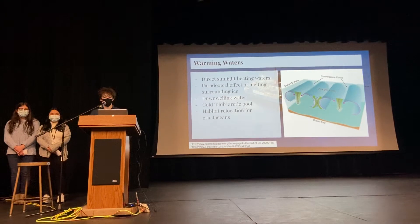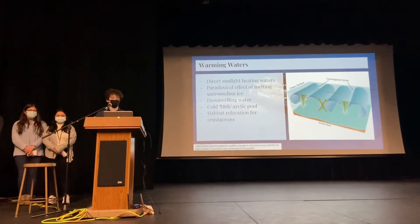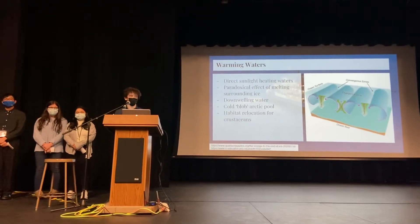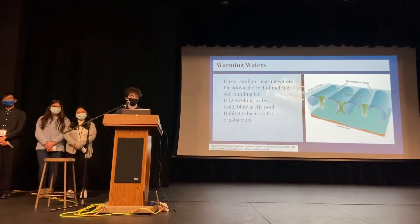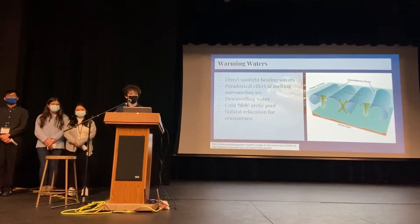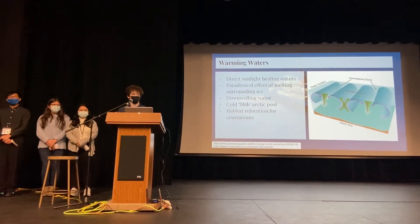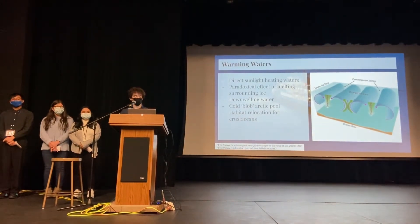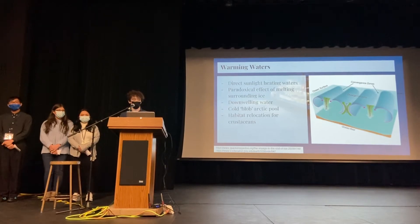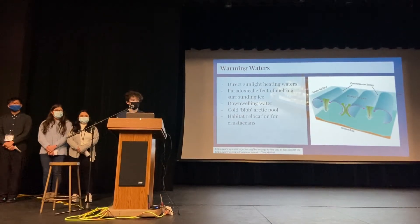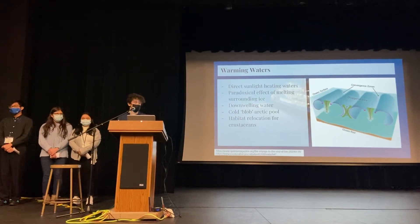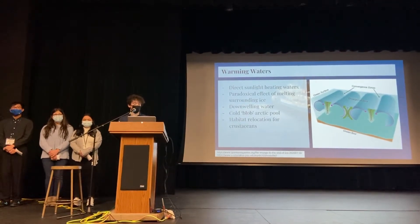With direct sunlight on water, we see this paradoxical effect of melting sea ice, causing even more sunlight exposure, further melting sea ice around. And when the sea ice melts, we see this accumulation of a large amount of cold water, condensed, that will downwell in the Arctic and form a cold block at the bottom of the Arctic Ocean. This can cause marine organisms, such as crustaceans, to relocate their habitats.